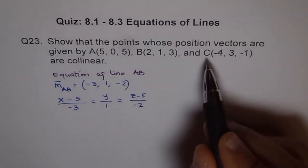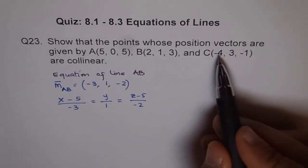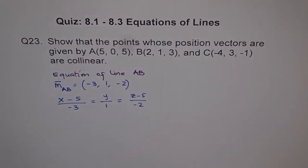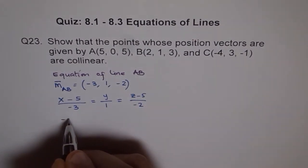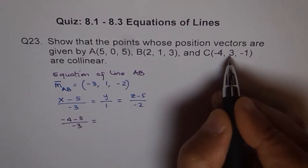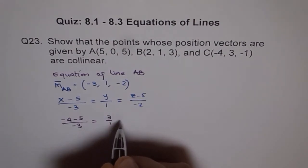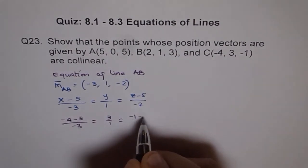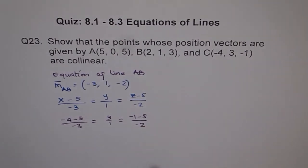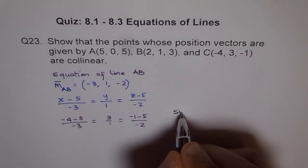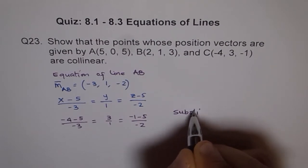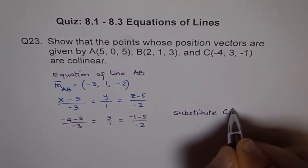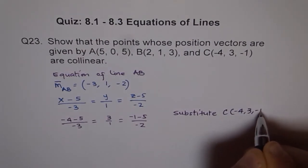Now, to check if C satisfies this equation or not, let's plug in these points in our equation and see for ourselves whether we get the right answer or not. So let's do it. For x, we'll write minus 4. So we'll write minus 4 minus 5 over minus 3 is equal to, y is 3. So it is 3 over 1, and z is minus 1. So minus 1 minus 5 over minus 2. What are we doing here? We substitute C, which is minus 4, 3, and minus 1.